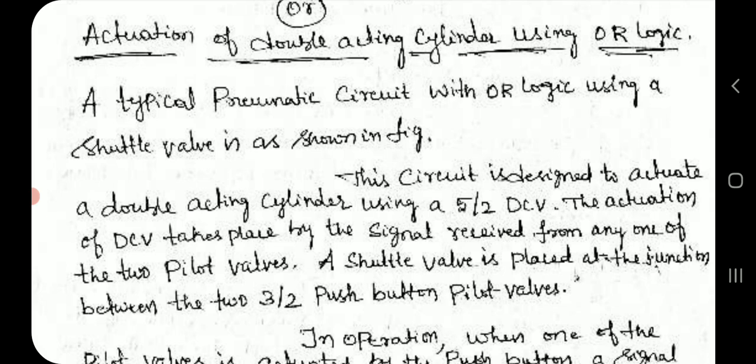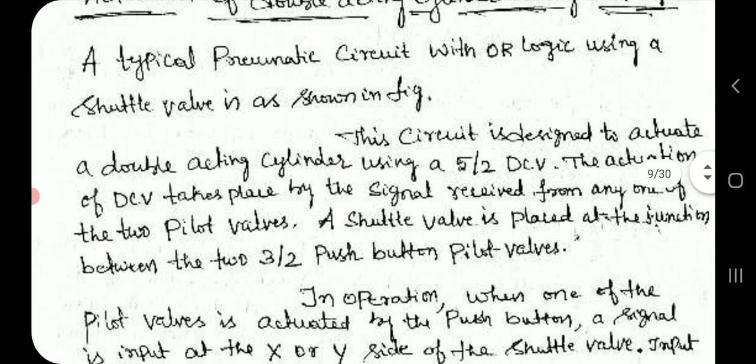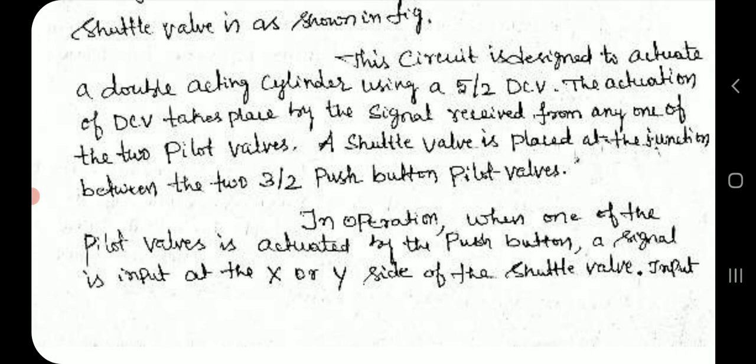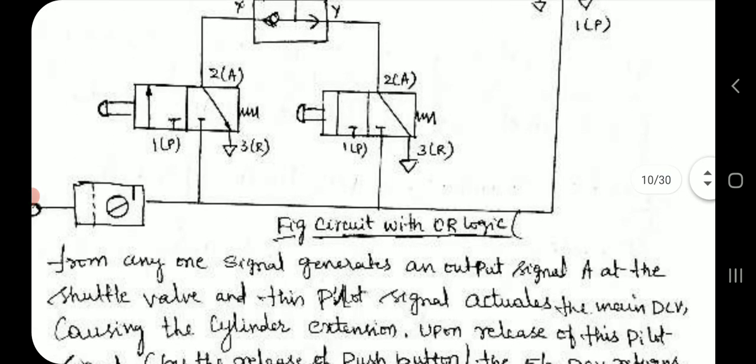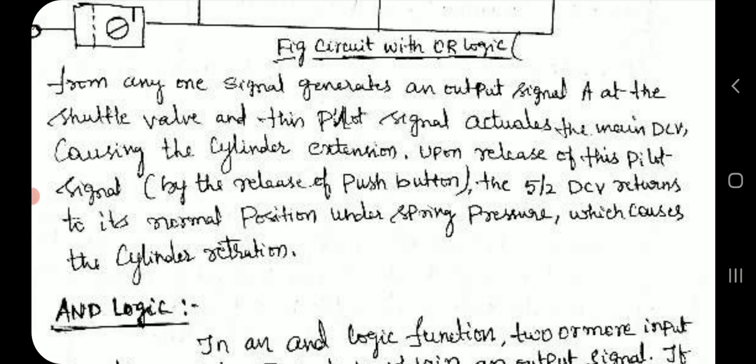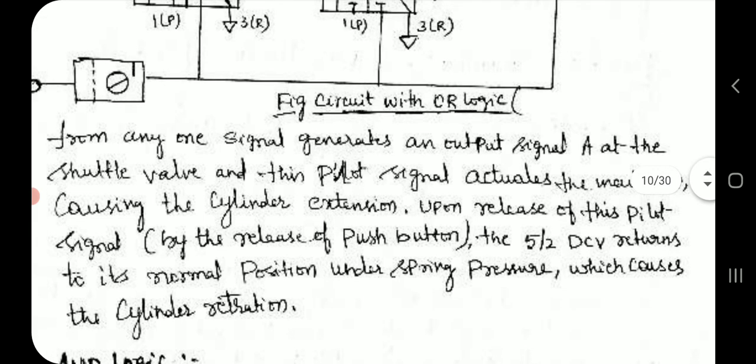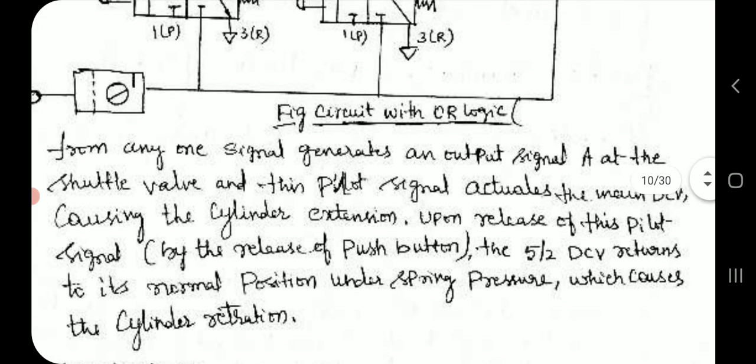A shuttle valve is placed at the junction between the two 3/2 push button pilot valves. In operation, when one of the pilot valves is actuated by the push button, a signal is input at the X or Y side of the shuttle valve.